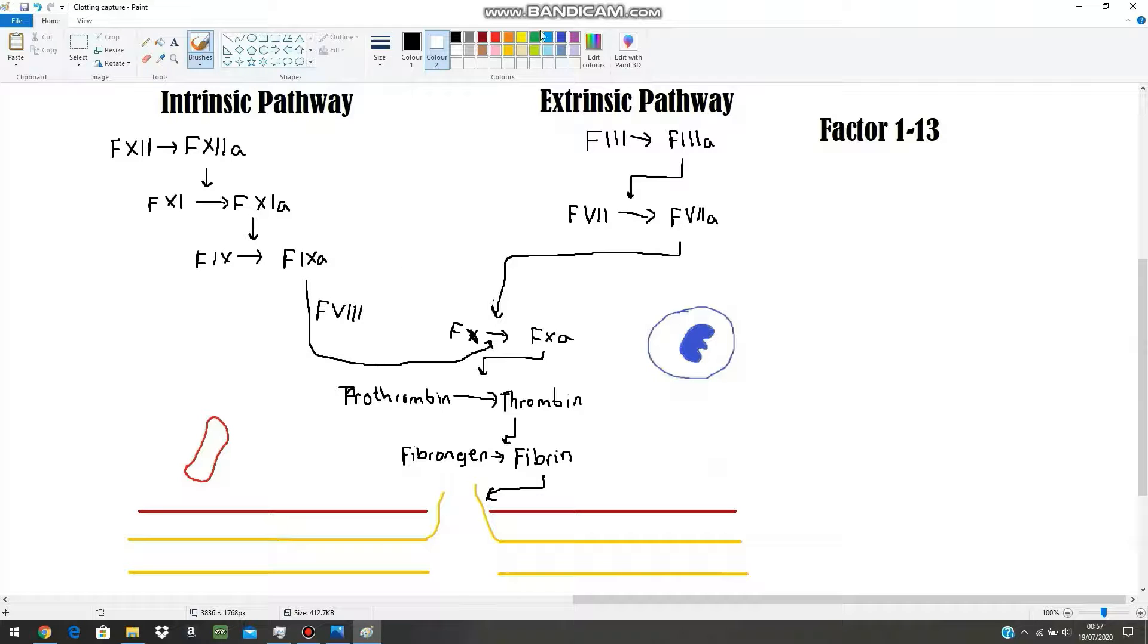You can see how both pathways converge on factor 10. Now why was I raving on about thrombin? Well because thrombin really helps to upscale and really increase the activity of the intrinsic pathway by majorly affecting how much factor 11 is converted to factor 11a. And because more and more factor 11 can be converted to factor 11a, the thrombin really helps to propel this whole pathway forward. So you can see how the extrinsic pathway initially forms the thrombin, the intrinsic pathway keeps it going.